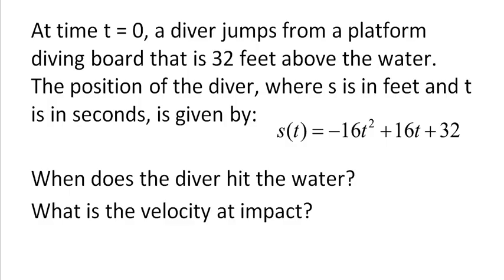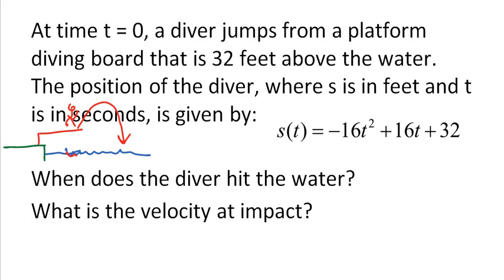Let's do one more problem. At time t equals 0, a diver jumps from a platform — a diving board — that is 32 feet above the water. The position of the diver, where s is in feet and t is in seconds, is given by negative 16t squared plus 16t plus 32. I have water here, a pool side, and the diver on the platform who is going to jump and dive into the water. The height of that diver at any given time can be found using this formula.